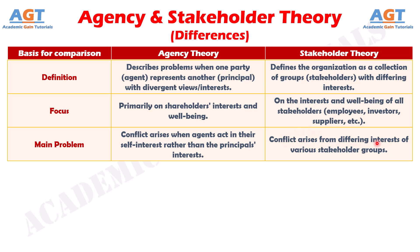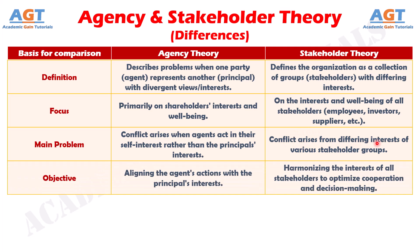Number four: the goal of agency theory is to reduce agency problems, while stakeholder theory aims to create a cooperative and inclusive decision-making process.